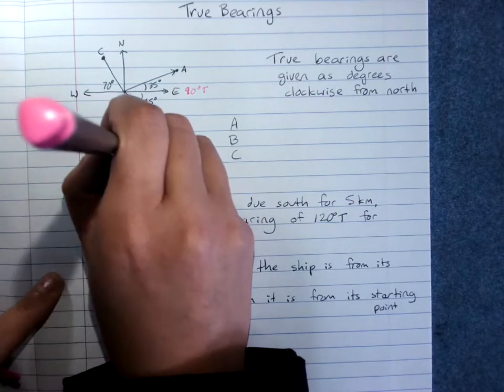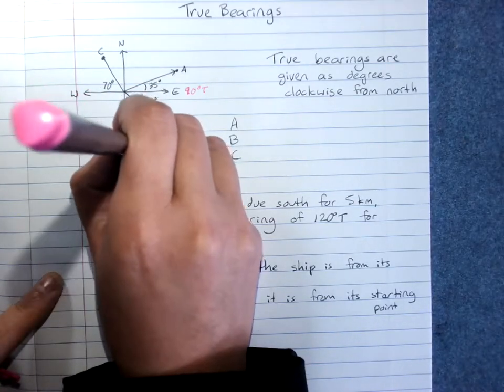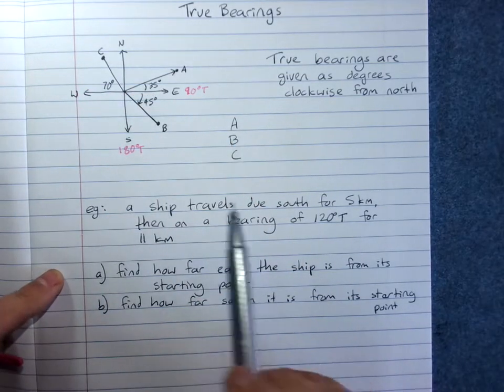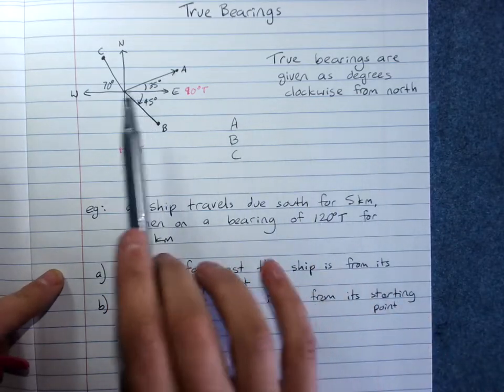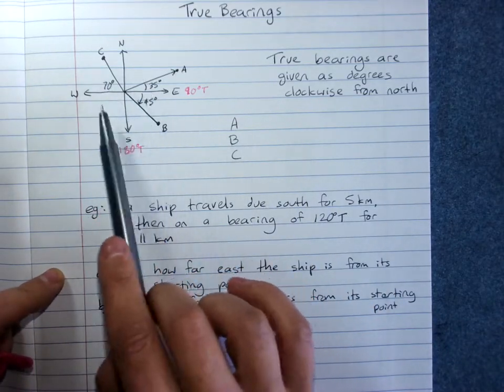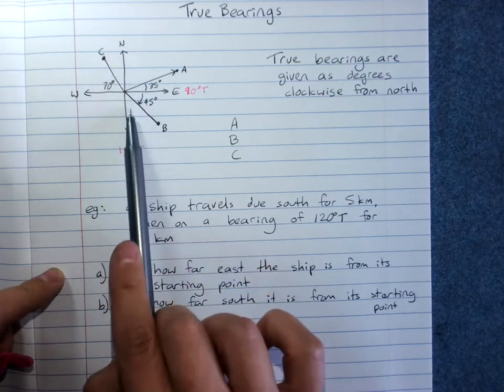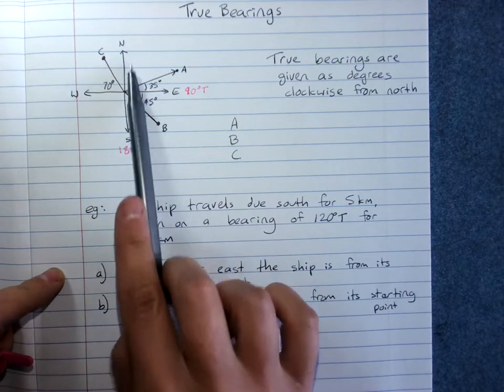South would be 180 degrees true. In a lot of situations we'll have what we call a compass rose, that little north-east-south-west diagram.